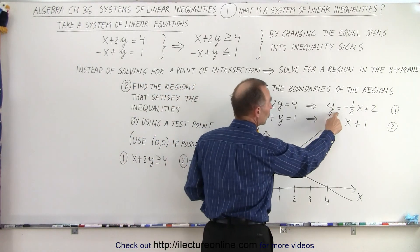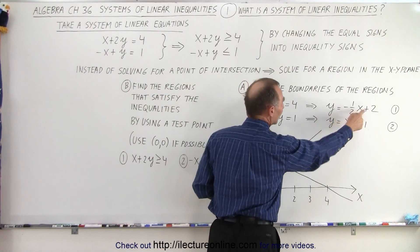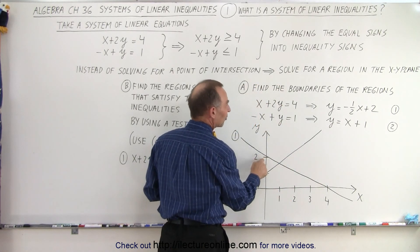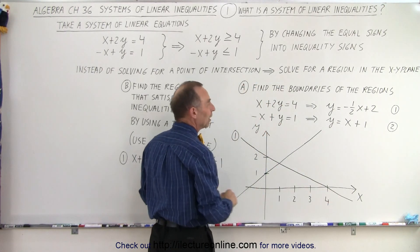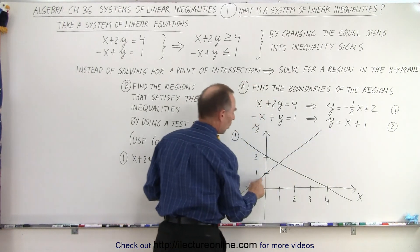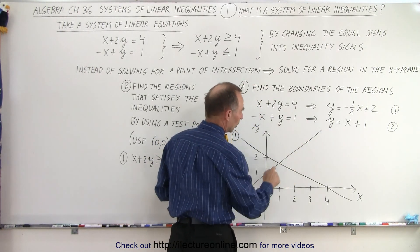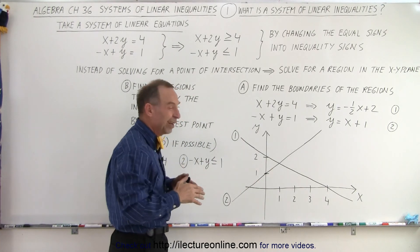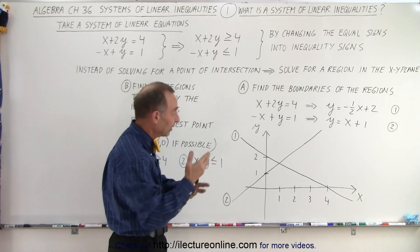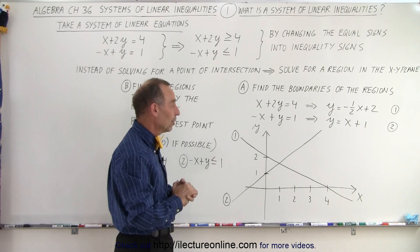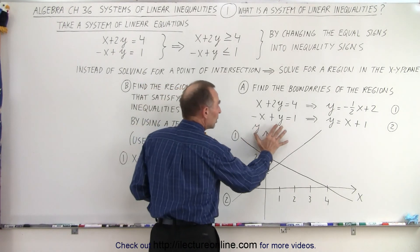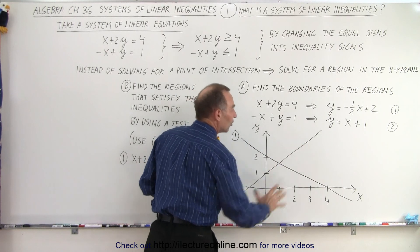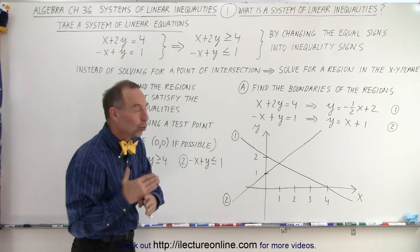So the first equation, y equals minus 1 half x plus 2. The intercept is 2 and the slope is negative 1 half. The second one, the intercept is 1 and the slope is positive 1. You do see that they cross at one point, but that's not the objective here. At some point we will want to know what that point is, but here it's not important.